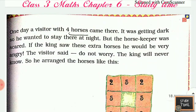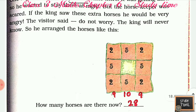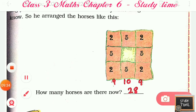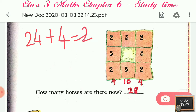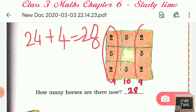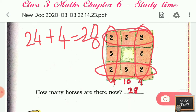One day a visitor with four horses came. It was getting dark so he wanted to stay the night, but the horse keeper was scared — if the king saw the extra horses he would be very angry. The visitor said 'Do not worry, the king will never know.' So he rearranged the horses. There were already 24 horses, plus the visitor's 4 — that is 28 horses. He arranged them so that every side still showed nine.